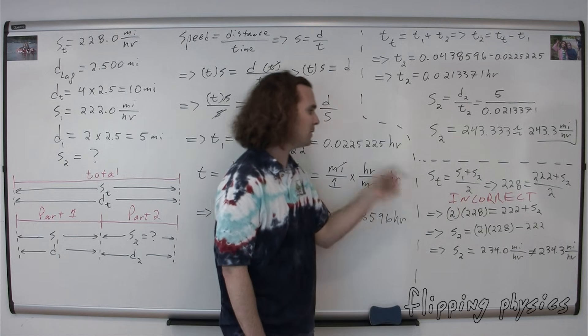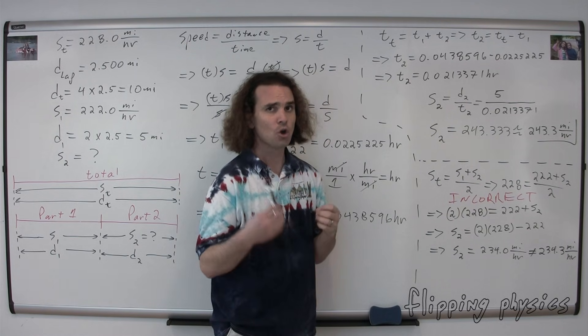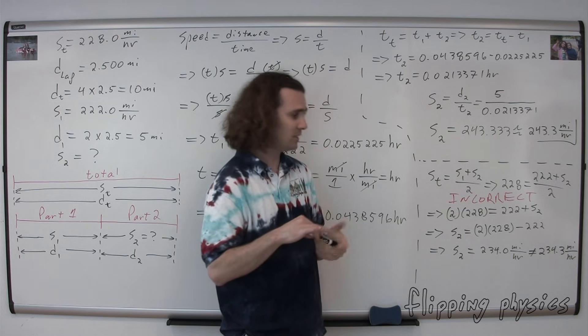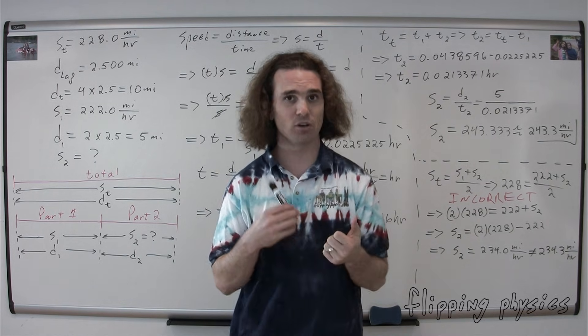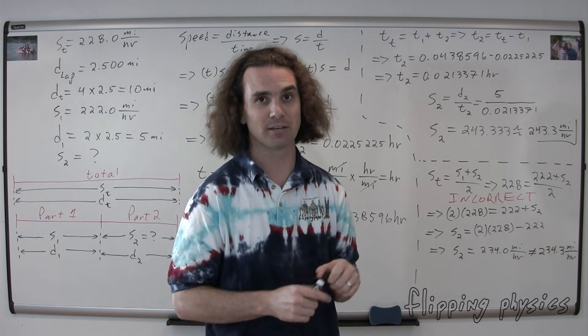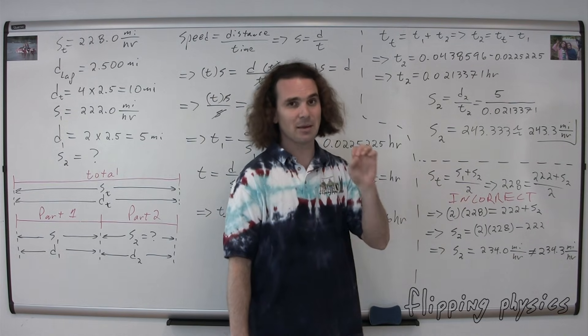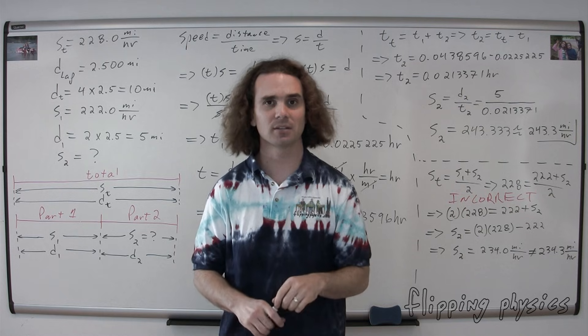Note again: 234.0 is not the same thing as 234.3 miles per hour. You can't add the two speeds together and divide by two to get the average speed. When is the only time this actually works? Bobby, when is that true? I think that's only when the object is moving at those speeds for the same amount of time. In this problem, it's the same distance, which is clearly very different. Please remember you can only do this when it's for the same amount of time, not the same amount of distance.